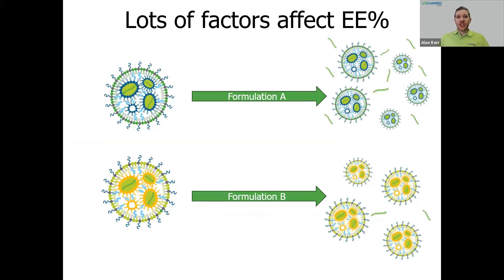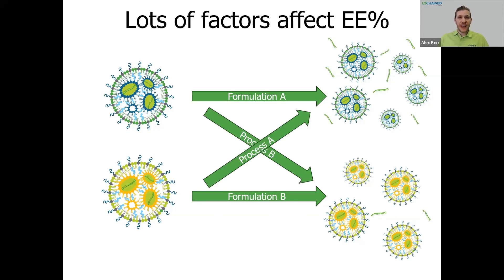Looking at encapsulation efficiency can let you know how good your lipid formulation is at entrapping your RNA, so it can help select formulations that are going to get you the most bang for your buck. However, this isn't the only part of the story. Other factors can affect your encapsulation efficiency as well — this could be the reactant buffer chosen, either the chemistry, pH or concentration, or another part of the processing such as the mixing conditions, flow rates and flow ratios, or even the downstream processing. So there's a lot to keep an eye on.